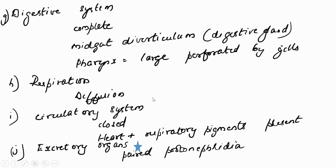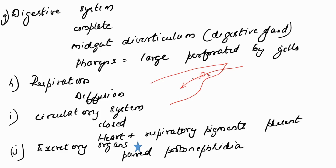Respiration in Cephalochordates occurs through diffusion. As water enters the body, the oxygen present in the water is taken in and the carbon dioxide present in the body is released out through the pharyngeal gill slit openings. That is the simple process of respiration.